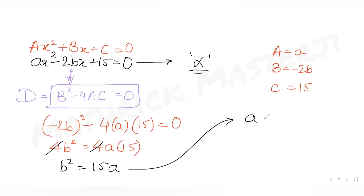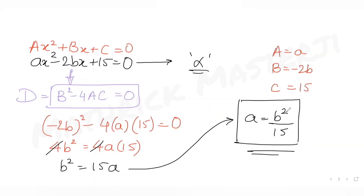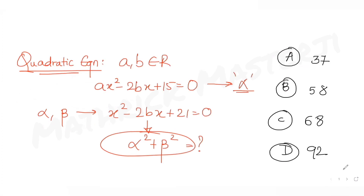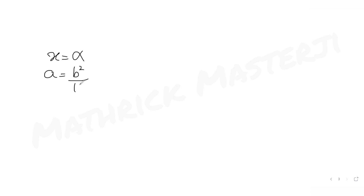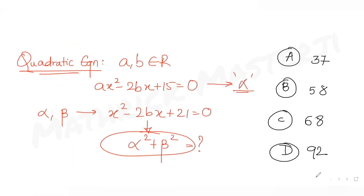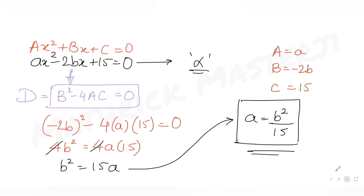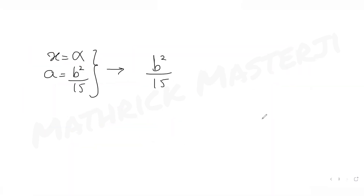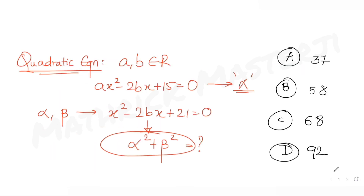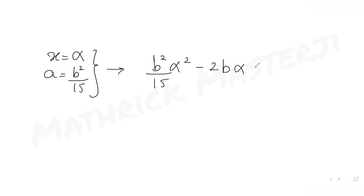From b² = 15a, we get a = b²/15. Since alpha is a root of the first equation, we substitute x = alpha and a = b²/15 into ax² - 2bx + 15 = 0, giving (b²/15)·α² - 2b·α + 15 = 0.